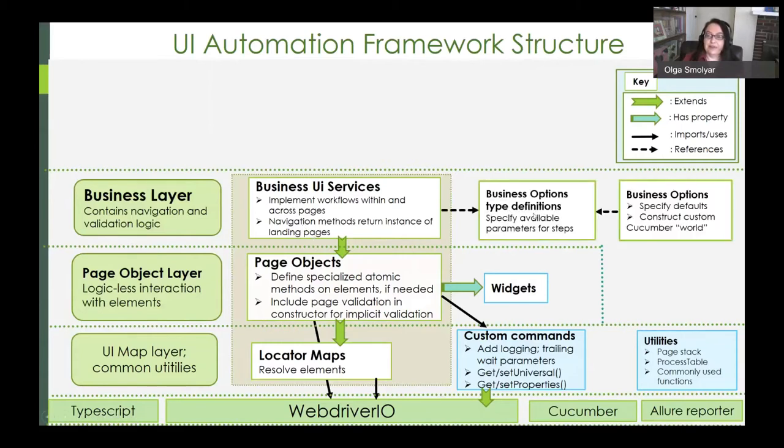Business UI services reference business option type definitions, which specify the available parameters for their methods. And likewise, there are business option classes that specify defaults and construct the custom cucumber world object. The cucumber world object is designed to maintain state among steps in a scenario. It contains business options and other data.